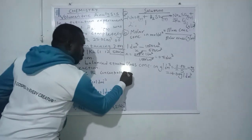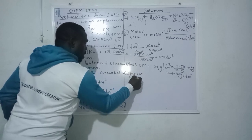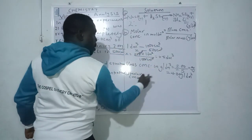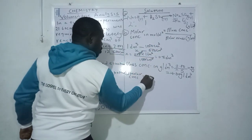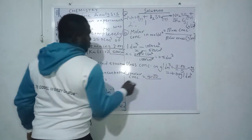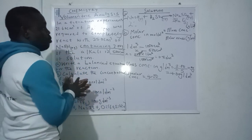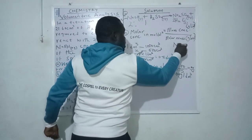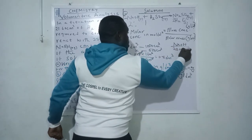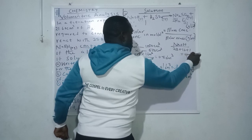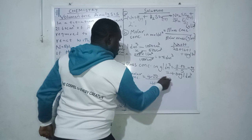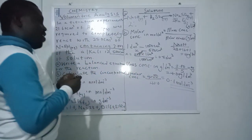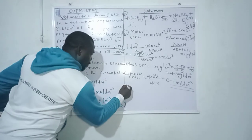Now we find the molar concentration. Molar concentration equals mass concentration divided by molar mass. Our mass concentration is 4.0 gram per dm³. The molar mass of NaOH is Na (23) + O (16) + H (1) = 40 gram per mol. So molar concentration = 4.0 ÷ 40 = 0.1 mol per dm³.